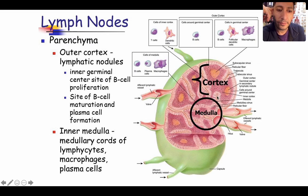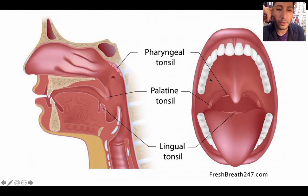Here is one lymph node with just a few regions. Here's the medulla and here's the cortex. You have your outer cortex and your inner cortex. Your germinal center would be these orange spots — the germinal center is located in the outer cortex. So: medulla, cortex split into outer and inner cortex, with the germinal center in the outer cortex.